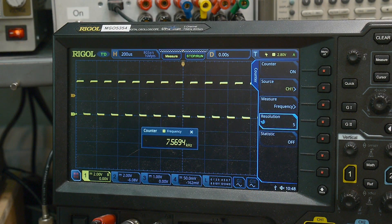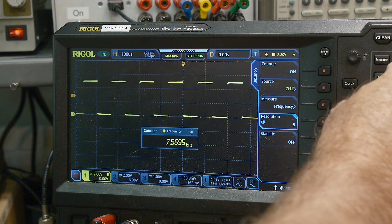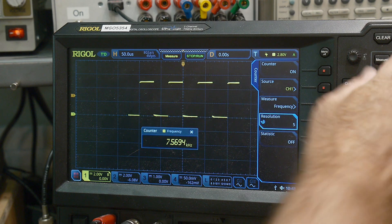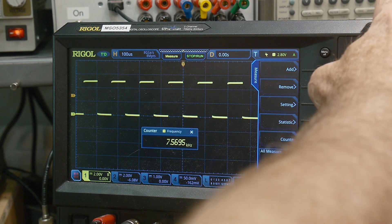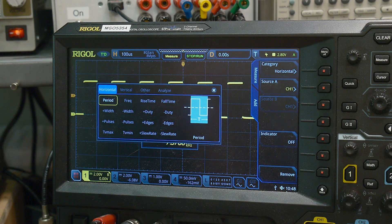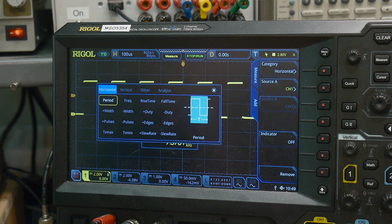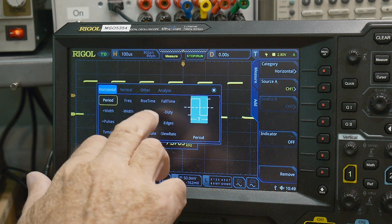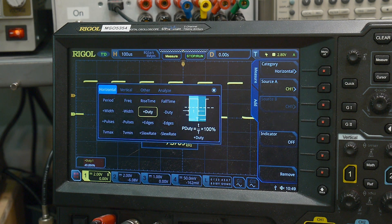And there we go. We get seven and a half kilohertz. Very nice square wave. Let's see here. Let's measure the rise time, fall time, duty.